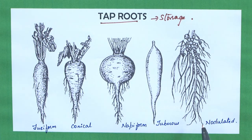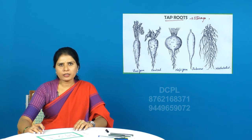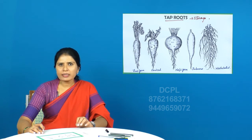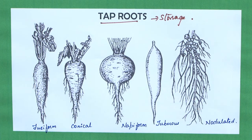Apart from the tap root, the secondary and tertiary roots are modified into nodulated structures called nodulated roots. Leguminous plants possess nodules in the secondary and tertiary roots, and the bacterium Rhizobium resides in these nodules. This helps in the fixation of nitrogen from the atmosphere.